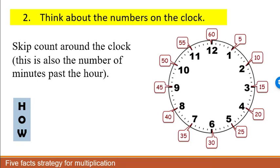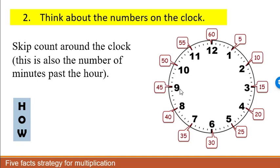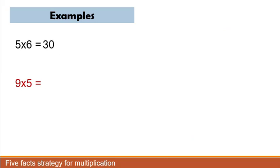Our next example is nine times five. We might skip count to the ninth number, or we might use our clock. And we see that the nine is 45 minutes past the hour. So our answer for nine times five is 45.